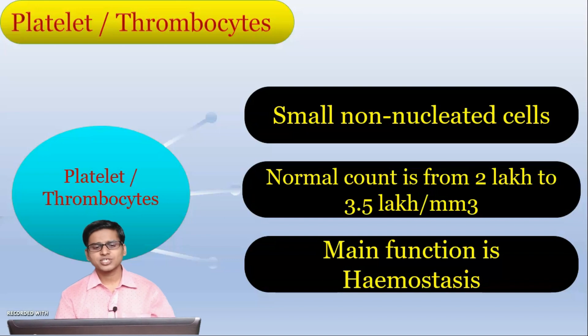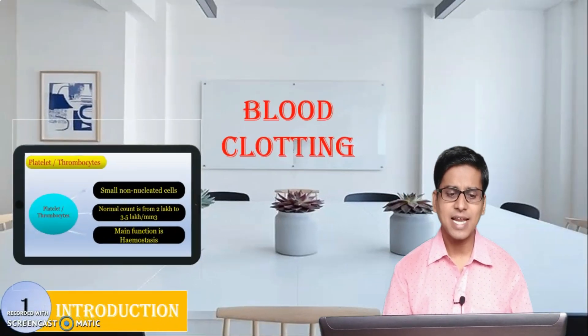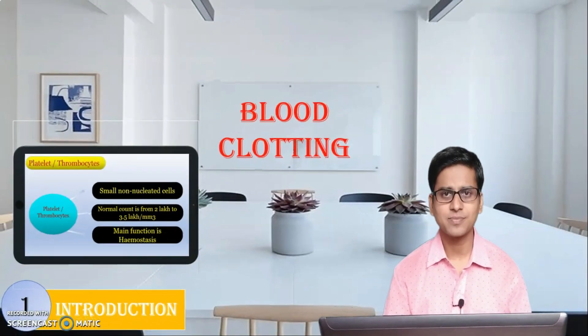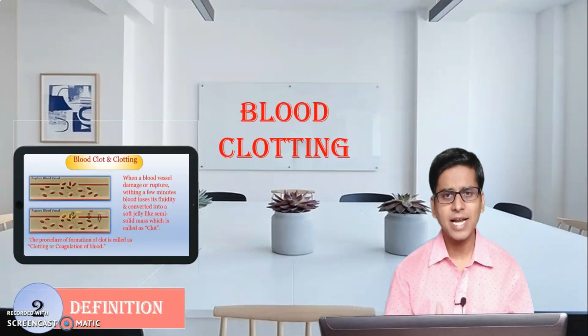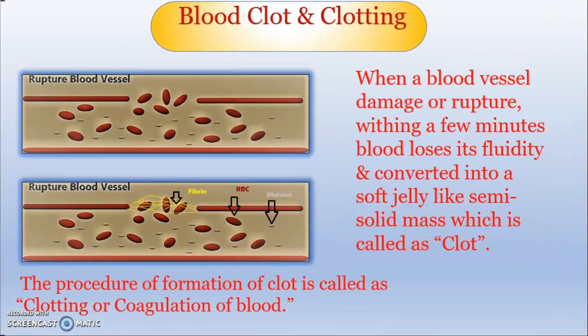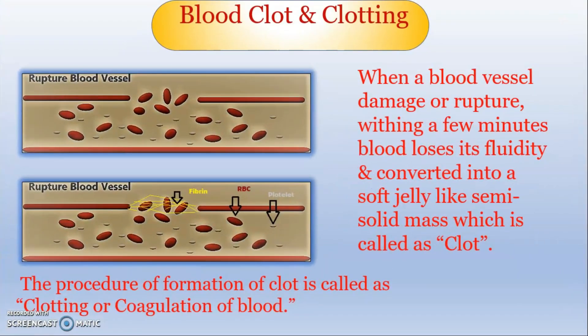After introduction, the next part is the definition of blood clot and clotting. When a blood vessel is damaged or ruptured, within a few minutes blood loses its fluidity and is converted into a soft jelly-like semi-solid mass. That mass is called a clot.